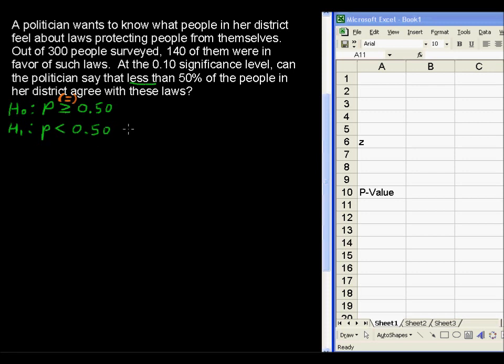Okay, then we're talking about, in words, this means that less than 50% of the people agree. Agree with such laws. All right, now we're going to find the p-value.